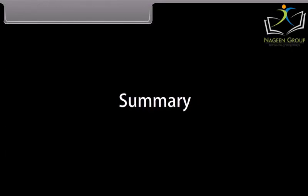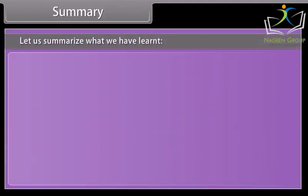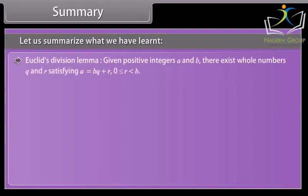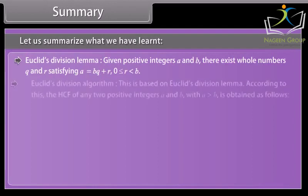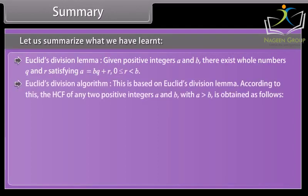Summary. Let us summarize what we have learned. Euclid's division lemma: Given positive integers A and B, there exist whole numbers Q and R, satisfying A equals BQ plus R, 0 is smaller than or equal to R is smaller than B.